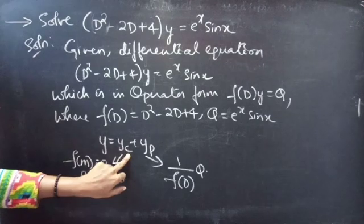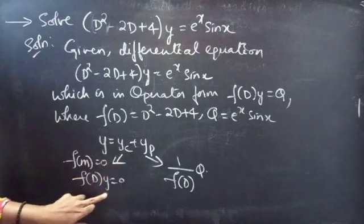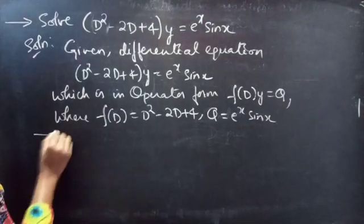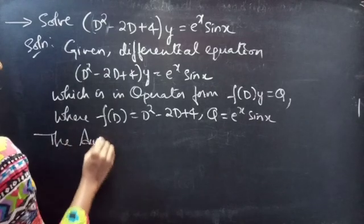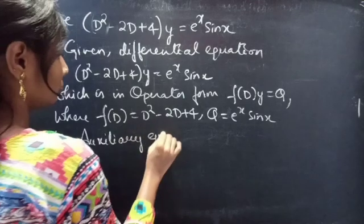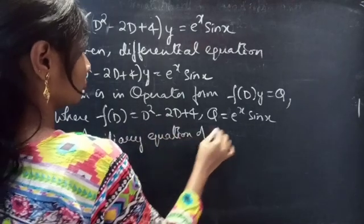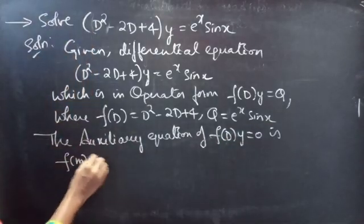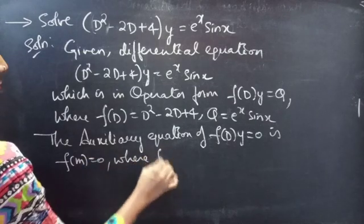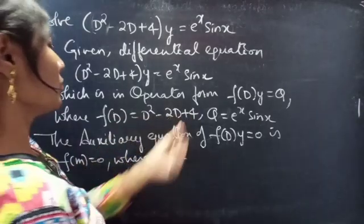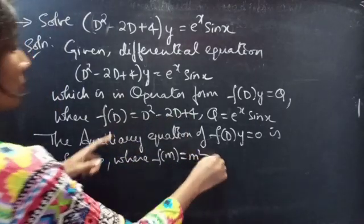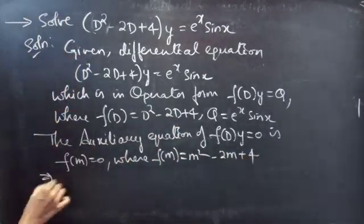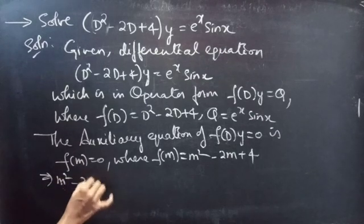Now firstly, we will find yc, the complementary function, using the roots of the auxiliary equation or homogeneous equation of the given non-homogeneous equation. The auxiliary equation of the homogeneous equation is f(m) = 0, where f(m) is obtained by replacing the differential operator D by m. So we get m squared minus 2m plus 4, which is f(m). Then the auxiliary equation becomes m squared minus 2m plus 4 equals 0.